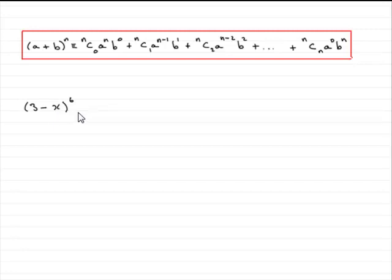To do this, remember the binomial expansion for a plus b to the power n, where n is a positive integer. We've got that here, positive integer n is 6. And you can see that a is the 3, and you've got to be careful here, b is the minus x.